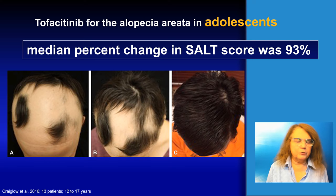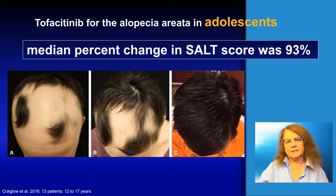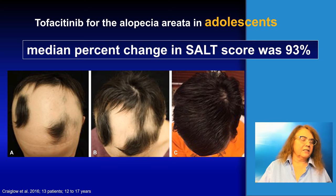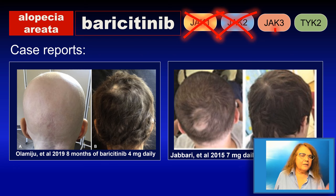JAK inhibitors, and in this case tofacitinib, have been shown to be even more effective in adolescents compared to adults. This is important because alopecia areata is a disease which very commonly affects children and adolescents. If we find a drug which is effective and safe for children with alopecia areata, then this will definitely be one of the major breakthroughs in dermatology.